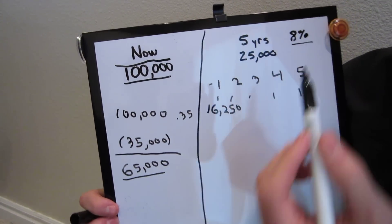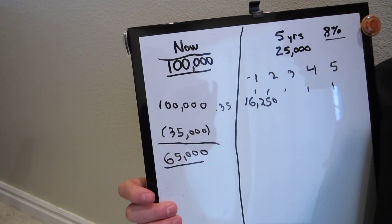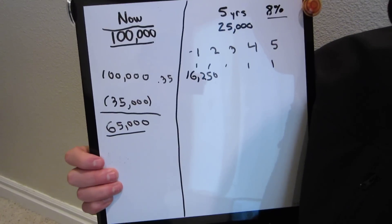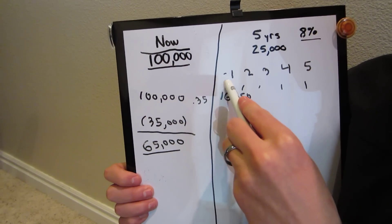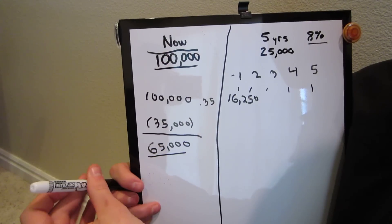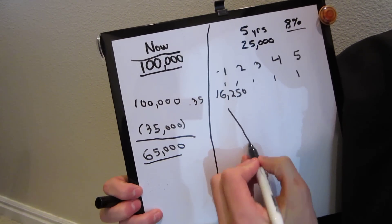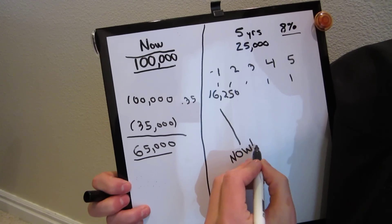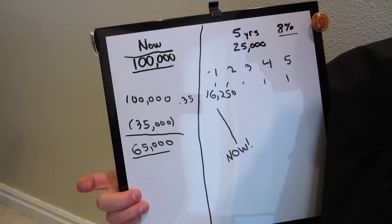We're also going to assume an 8% discount rate. What this means is that there's like an 8% inflation rate in your money, meaning that this $16,250, it's worth that in one year. However, if we want to bring it back to now, we're going to have to use our financial calculators.